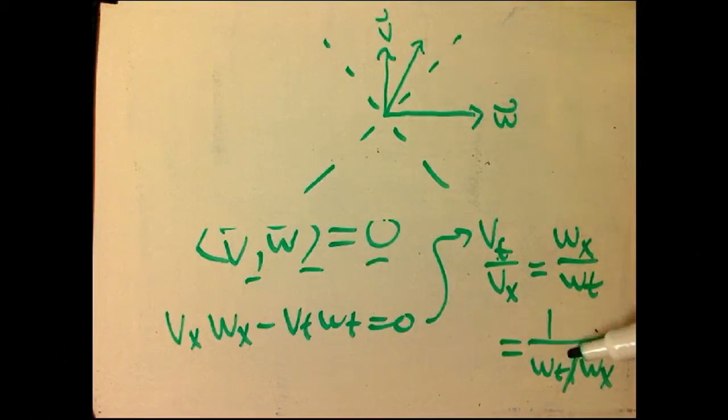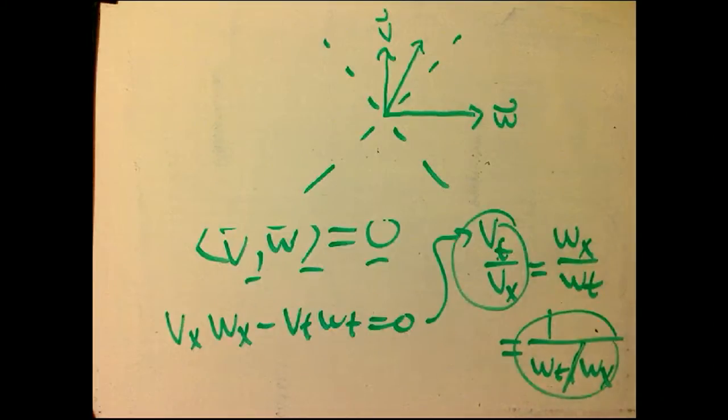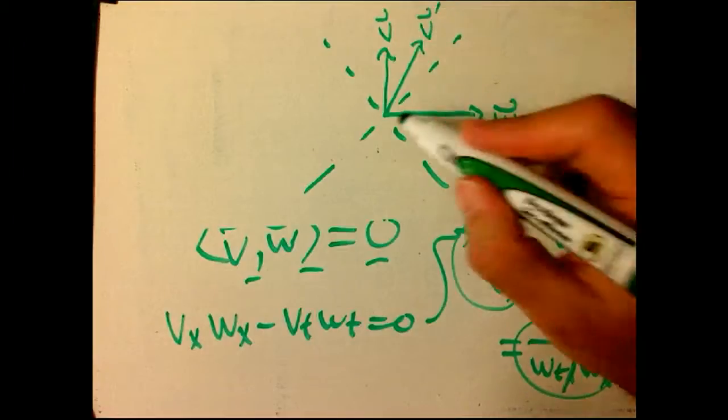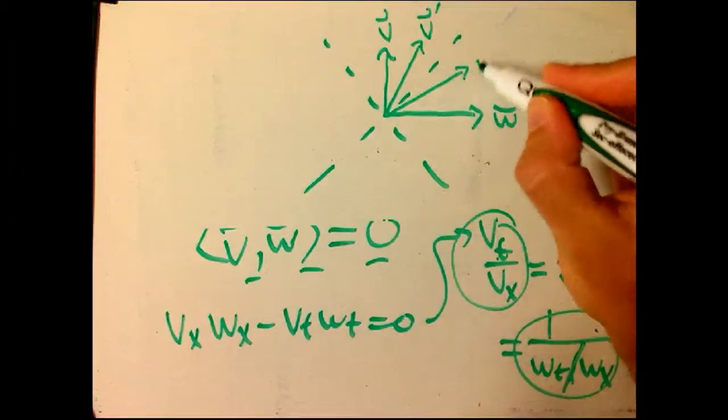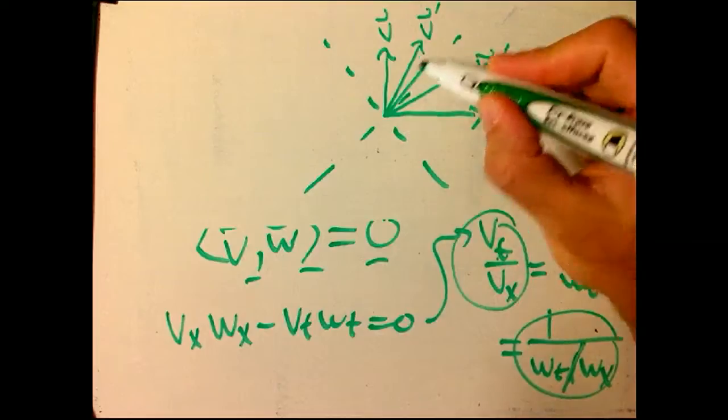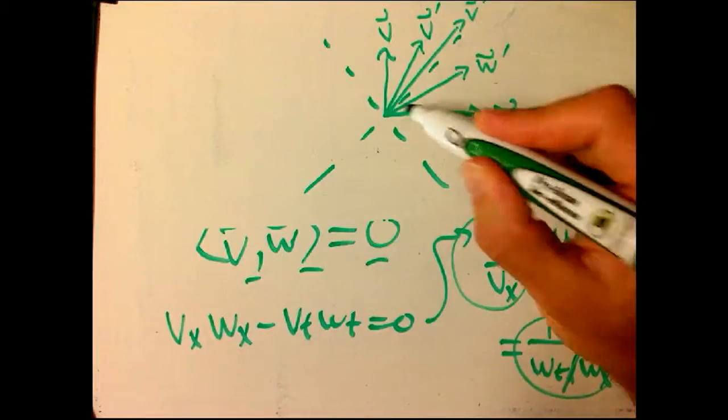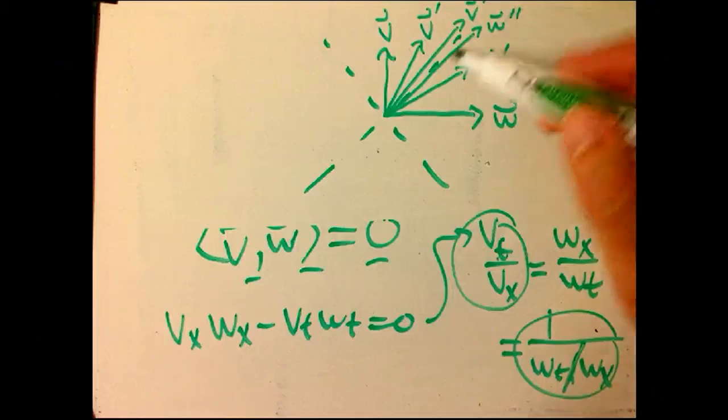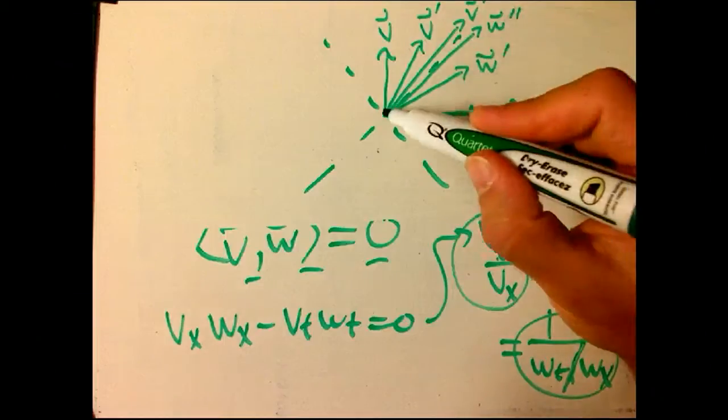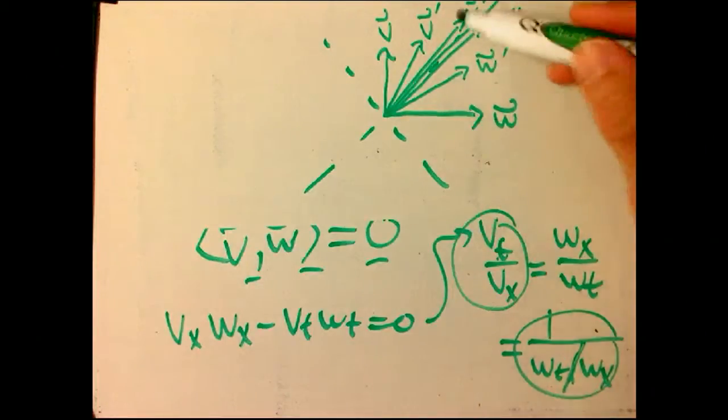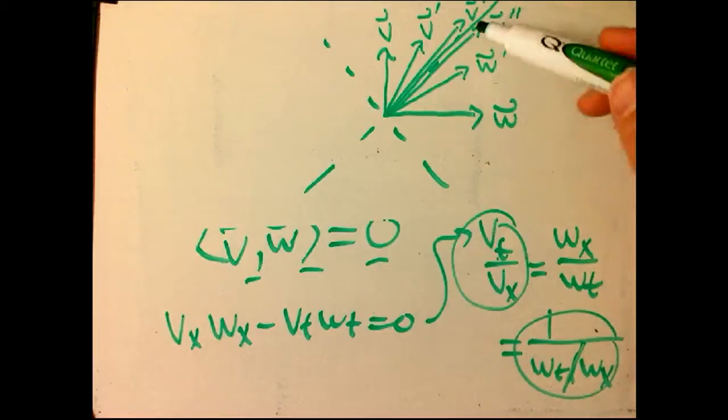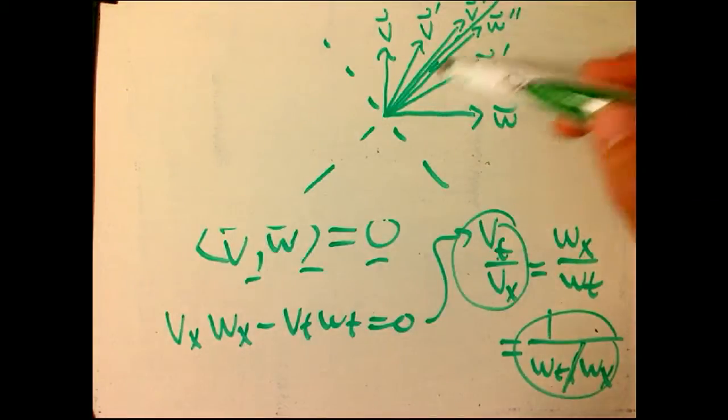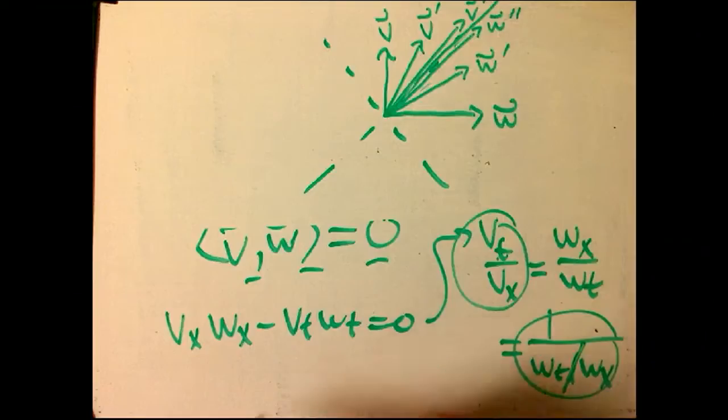What does that mean in terms of the picture? Here's my null cone. If this is v, then as we'd expect, w is perpendicular to that v. But as this slope gets smaller, this is the reciprocal slope, not the negative reciprocal. That's the thing we expect for Euclidean geometry. As this gets closer to the null cone, these guys get closer to each other. That's because a null vector is orthogonal to itself.